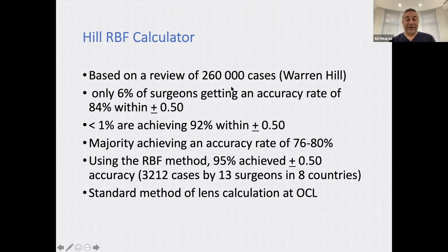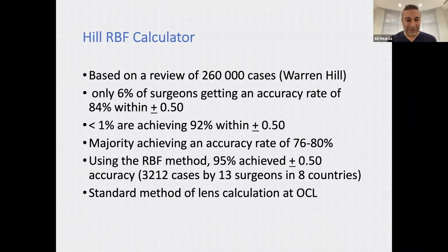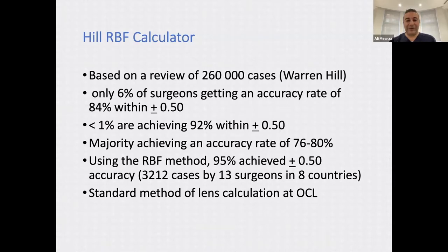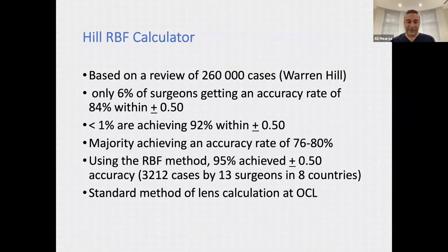In a review of 260,000 cases by Warren Hill, only 6% of surgeons were achieving 84% accuracy within plus or minus half a diopter of target, and less than 1% were achieving 92%. The average accuracy rate was around 76 to 80%. However, using the AI model method, 95% of surgeons were achieving plus or minus half diopter accuracy across 3,212 cases from 13 surgeons in 8 countries. This is now the standard method of lens calculation at OCL Vision.